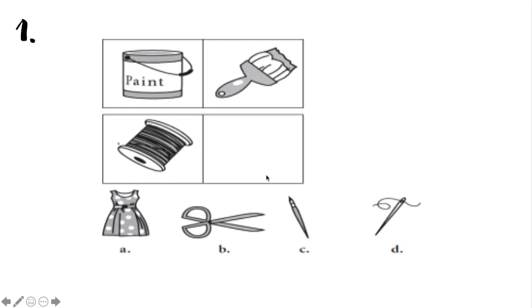To find the correct answer, let's look at the first two pictures. We have a pail of paint and a paintbrush — we use a paintbrush for our paint. So for the pool of thread, we need to find the tool we use with thread. A dress? No. A pair of scissors? An artist paintbrush? The correct answer is letter D, needle.